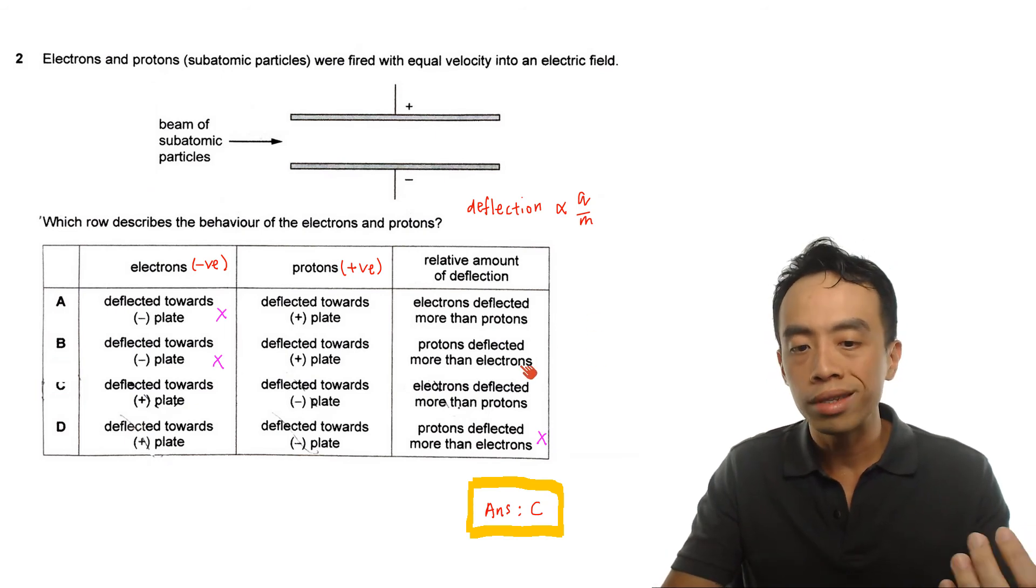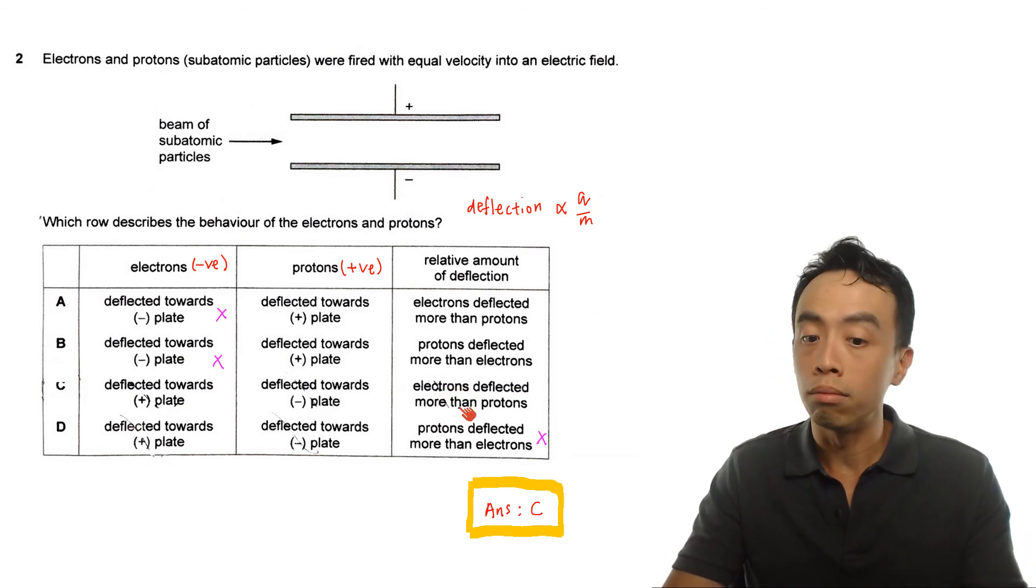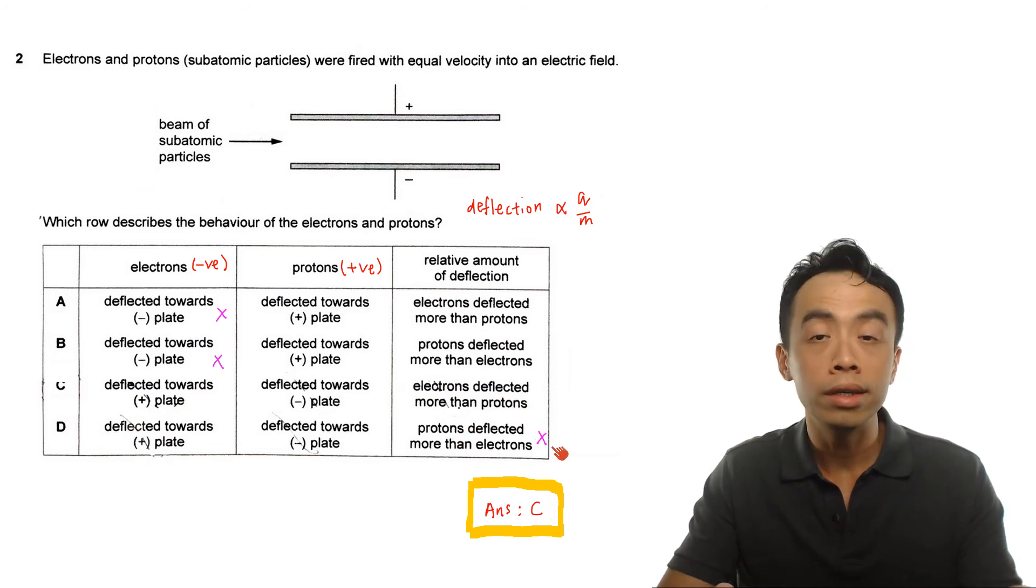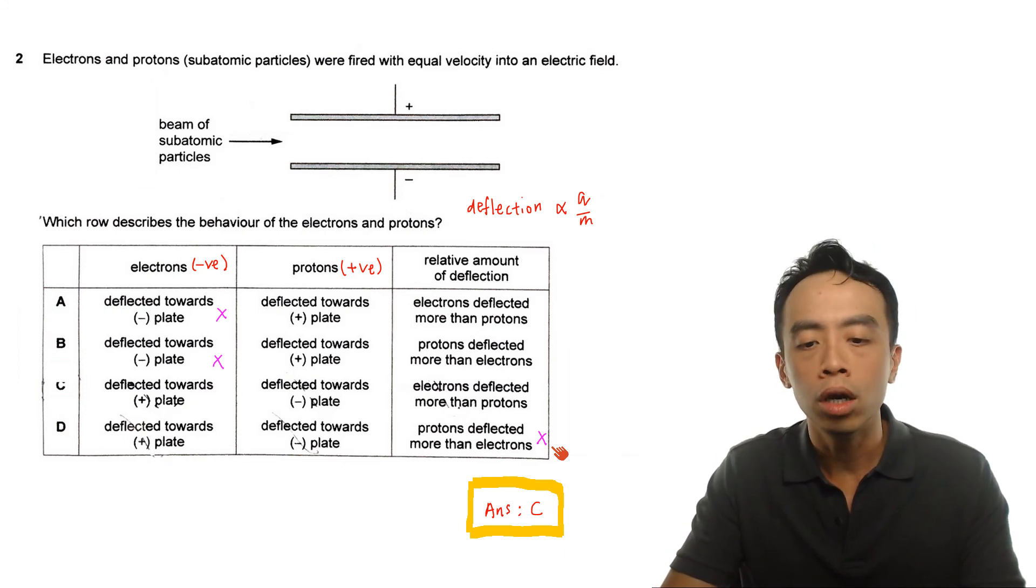So if I compare options C and D, electrons deflected more than protons versus protons deflected more than electrons, obviously C will be the answer for this question. So this question is very simple. It makes use of a very simple idea and I think we can do this under 10 or 15 seconds. So the answer to this question 2 will be option C.